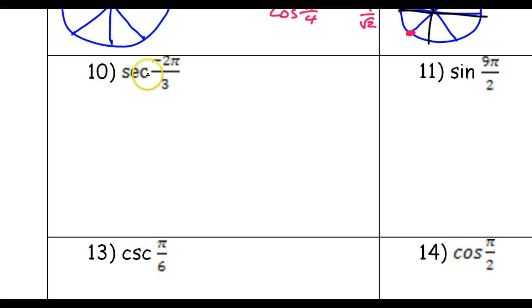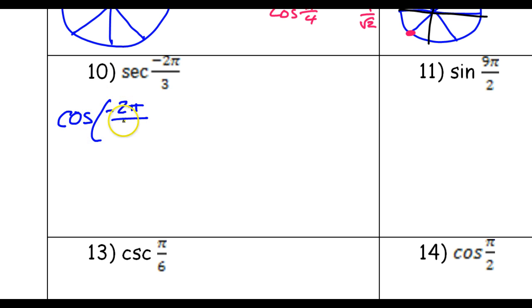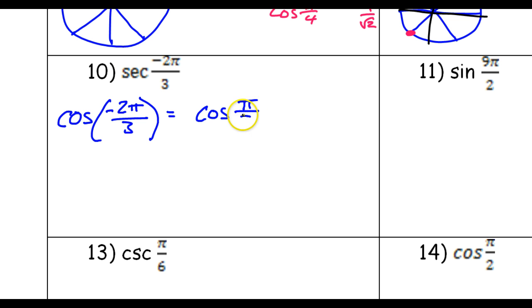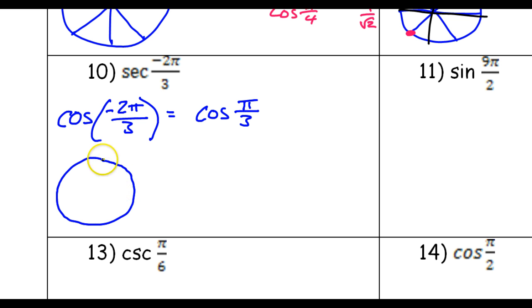Secant is a reciprocal trig function — secant is the reciprocal of cosine. So let's start by finding the cosine of negative two pi over three, and then whatever that is, we'll just take the reciprocal of it. The cosine of negative two pi over three is going to be the same thing as the cosine of the reference angle pi over three, give or take a negative sign. The way we figure out if we need a negative sign or not is to look at the quadrant.